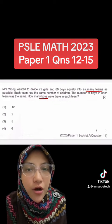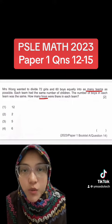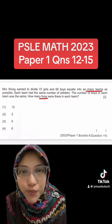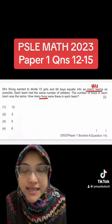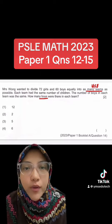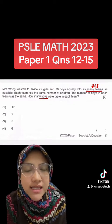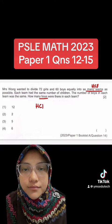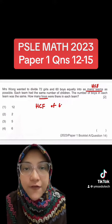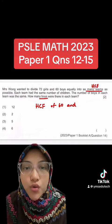This question is testing on highest common factor between 60 and 72. Since Mrs Wong wanted to form as many teams as possible, therefore, we need to find the HCF of 60 and 72. HCF of 60 and 72 is 12.